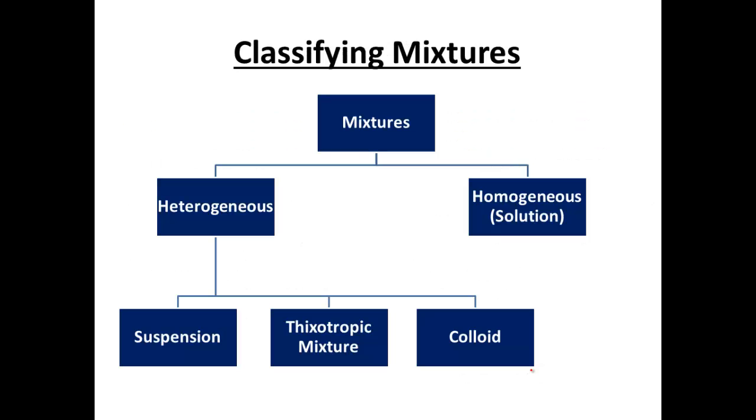Now, flowchart-wise, our mixtures can be broken down to heterogeneous, so are uneven, versus solutions, homogenous, or evenly mixed. So if we're unevenly mixed, we can be looking at a suspension, a thixotropic mixture, or a colloid. If we're evenly mixed throughout, we'll know them to be either a solution, as they're properly called, or a homogenous mixture.